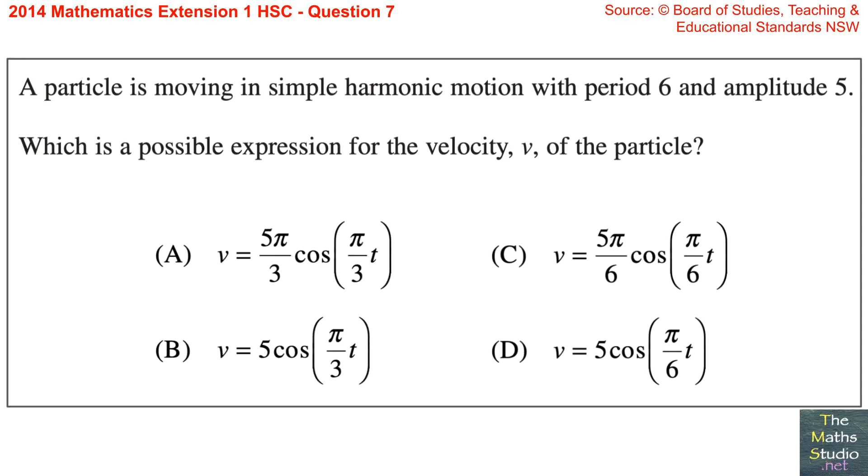Question 7. A particle is moving in simple harmonic motion with period 6 and amplitude 5. Which is a possible expression for the velocity v of the particle?